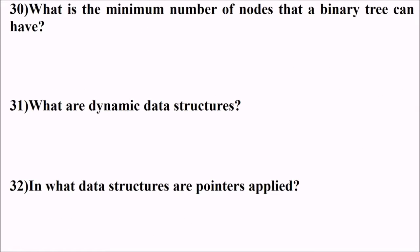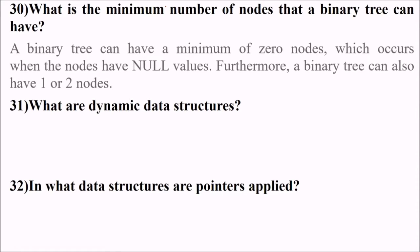30 is what is the minimum number of nodes that a binary tree can have? A binary tree can have a minimum of zero nodes, which is null, which occurs when the node has a null value. So you don't even have any numbers. It is also possible to have a null value in one node and term it as a binary tree.